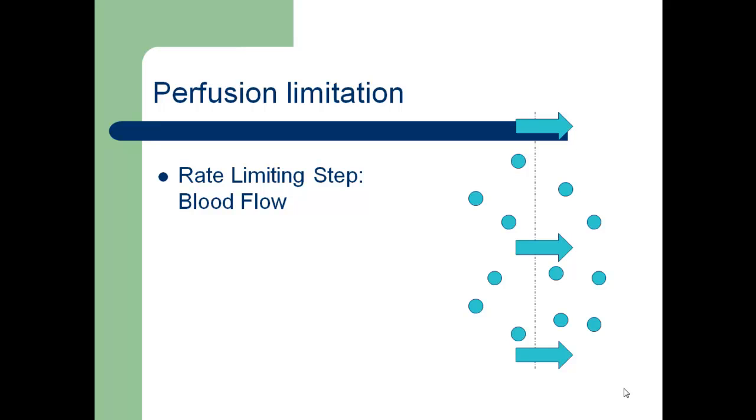In perfusion, the rate limiting step is blood flow. So the problem here isn't a drug getting across the membrane, it's that we're having a hard time getting the blood flow to the area that we need it to get to help the drug cross from blood to tissue.